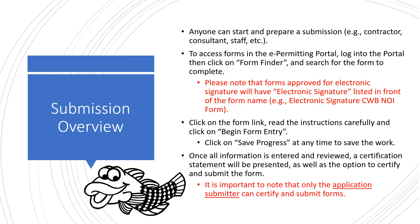Anyone can start and prepare a submission — for example, a contractor, a consultant, or staff. To access forms in the e-Permitting Portal, log into the portal, then click on Form Finder and search for the form to complete. Please note that forms approved for electronic signatures will have 'electronic signatures' listed in front of the form name, for example, electronic signature CWBNOI form. Click on the form link, read the instructions carefully, and click on Begin Form Entry.